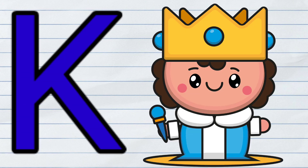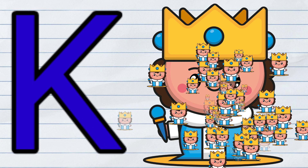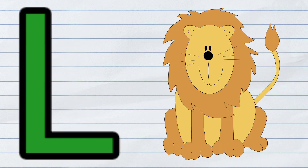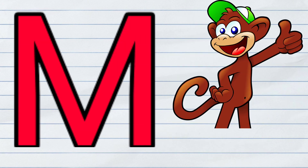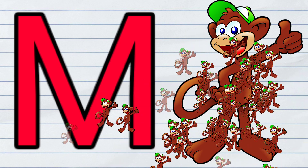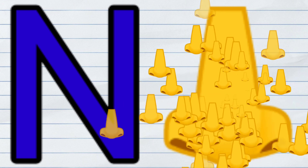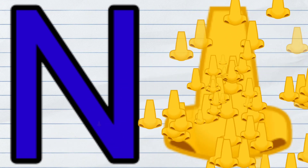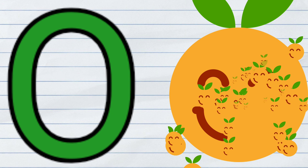K. K for king. L. L for lion. M. M for monkey. N. N for nest. O. O for orange.